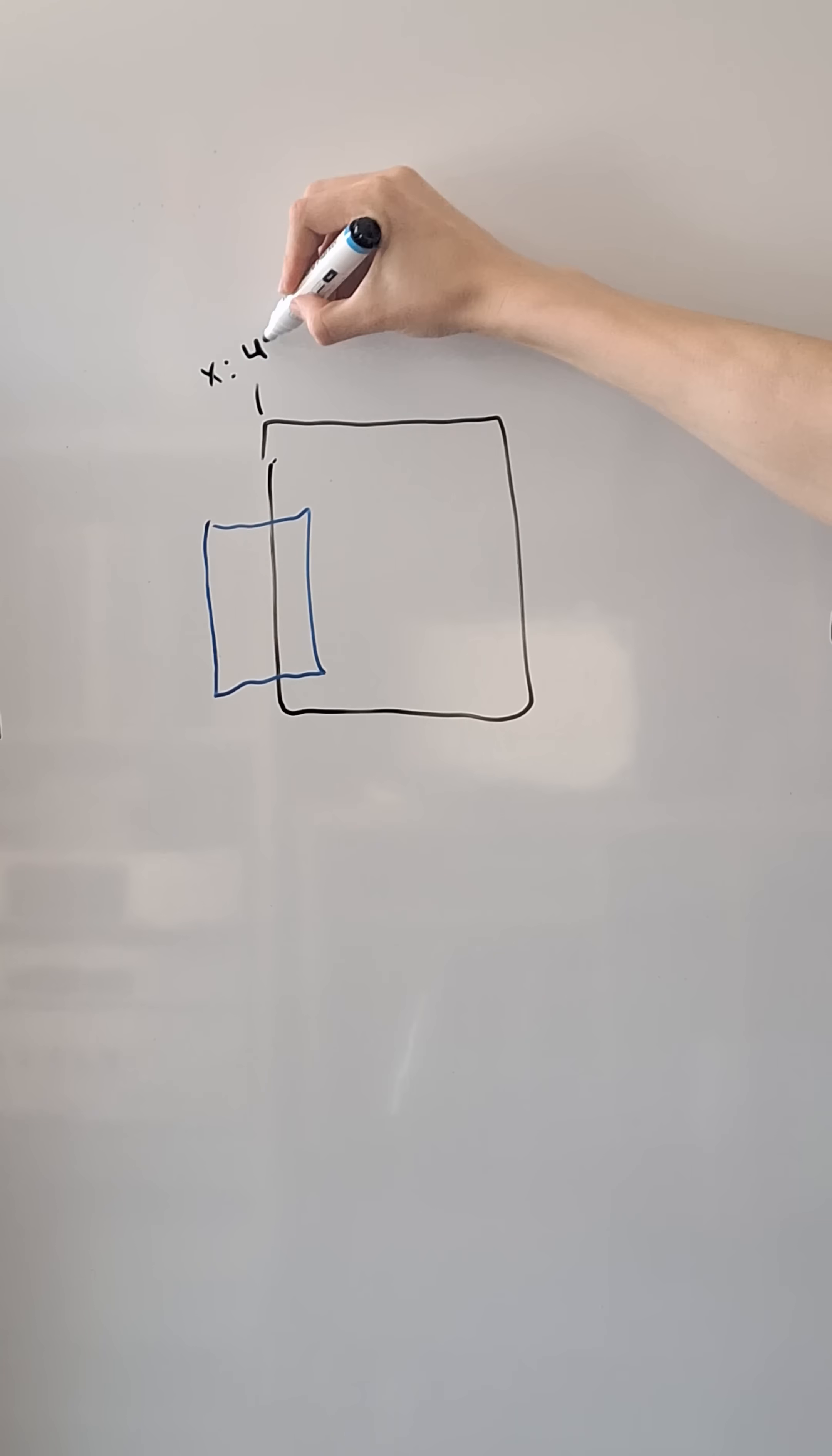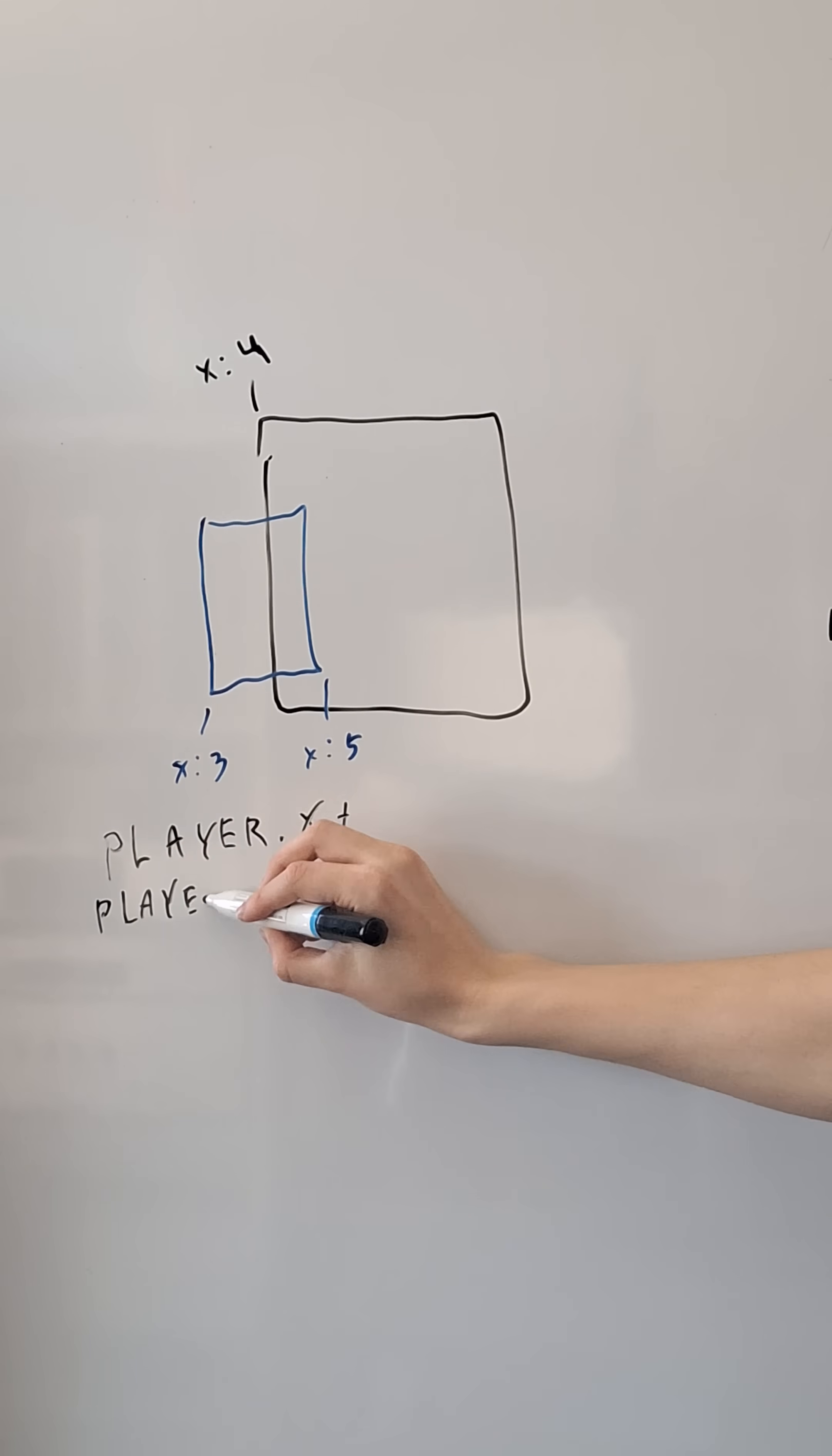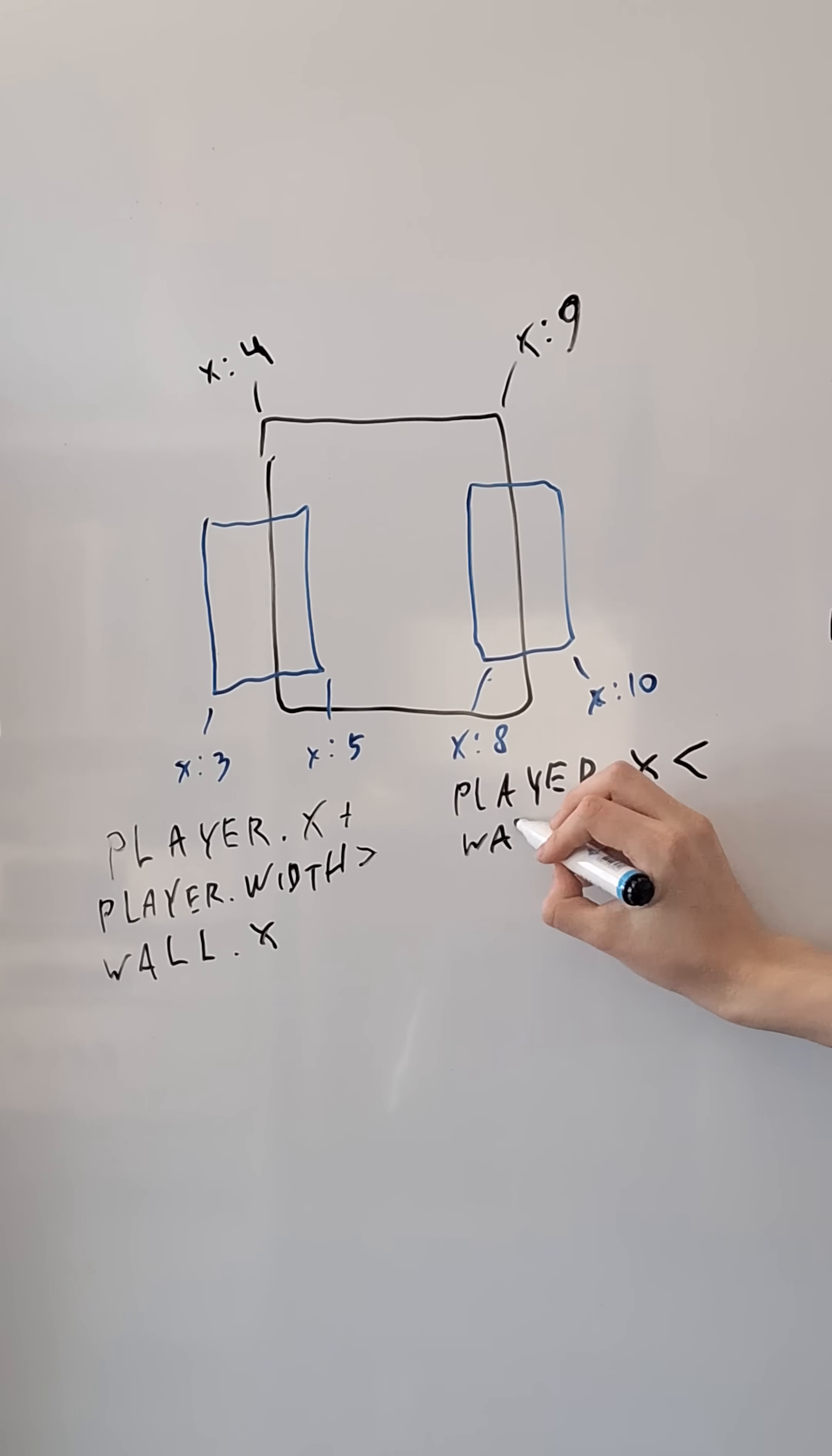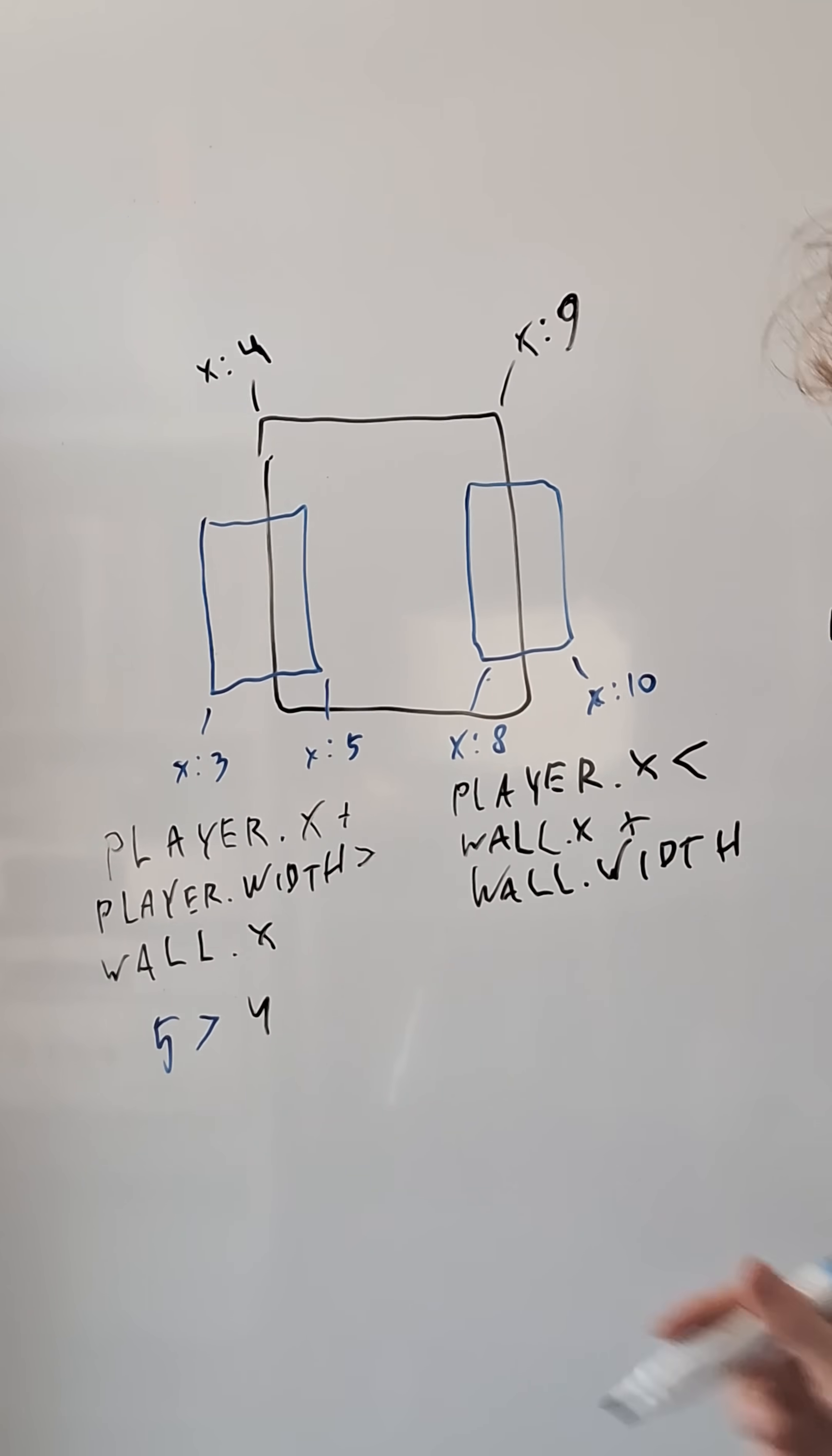If the right side of the player has a higher x-value than the left side of the wall, and the right side of the wall has a higher x-value than the left side of the player, we can say that the rectangles are overlapping on the x-axis.